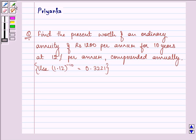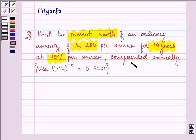It says, find the present worth of an annuity of rupees 1200 per annum for 10 years at 12% per annum compounded annually.